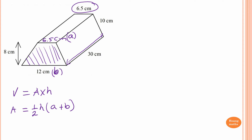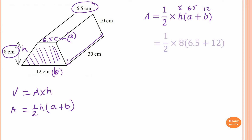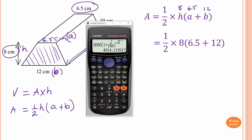The most important thing is to identify the perpendicular height. Area of a trapezium is a half of height times (A plus B). We know that height is 8, A is 6.5, and B is 12. So we substitute these values in: a half of 8, times (6.5 plus 12). Putting that in the calculator — 0.5 times 8, bracket 6.5 plus 12 — that gives us 74.